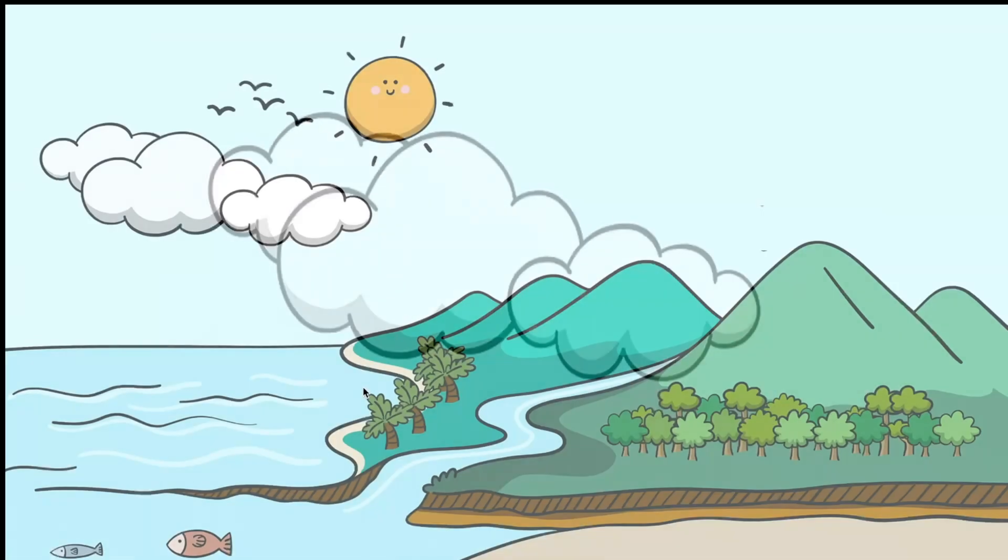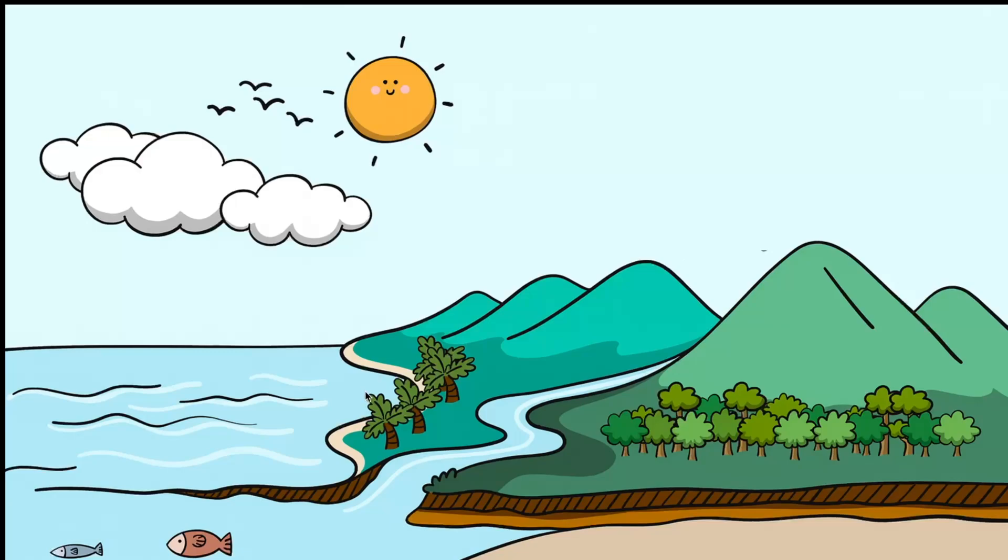Now eventually, as more and more droplets keep getting added and they merge together, the clouds become darker and heavier, eventually forming rain clouds.